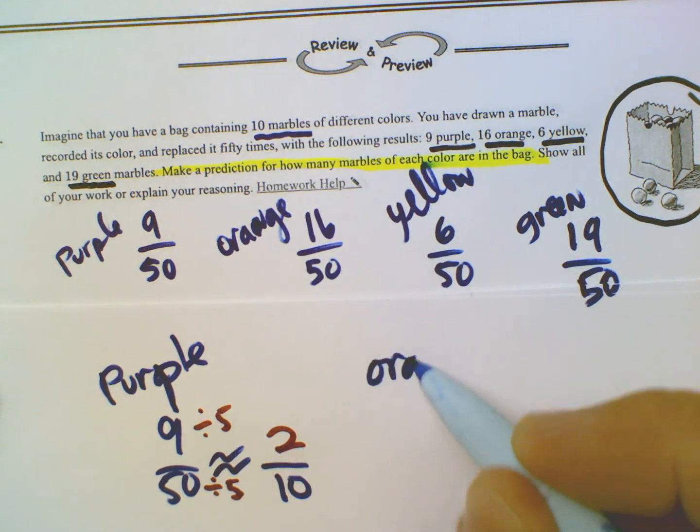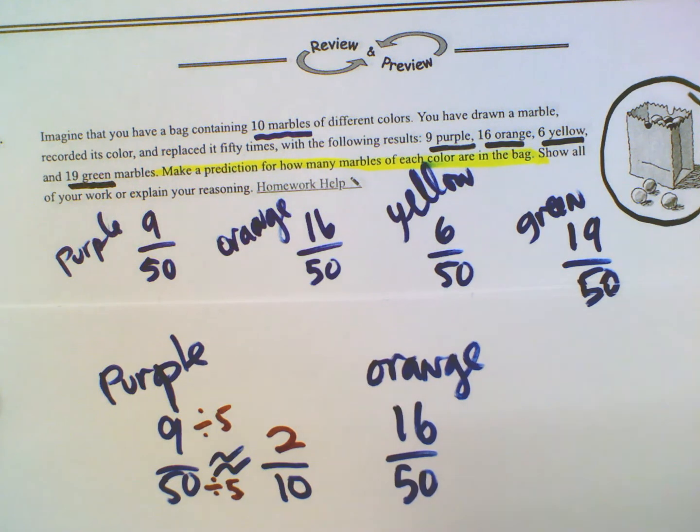So orange is 16 over 50, and again I need to get that to be approximately something over 10. So once again divide by 5 top and bottom. How many times approximately does 5 go into 16? It approximately goes in three times, so we'll have 3 out of 10. So now we're guesstimating that there's going to be 3 orange ones.